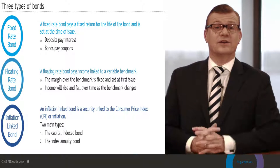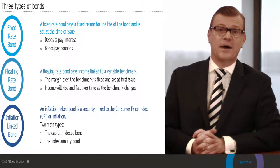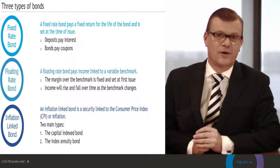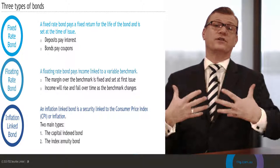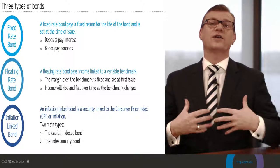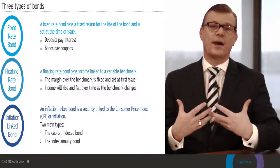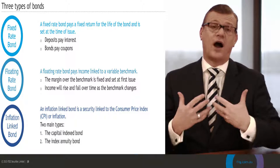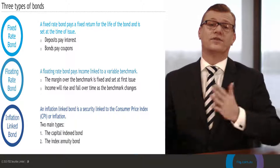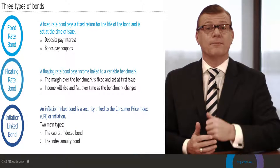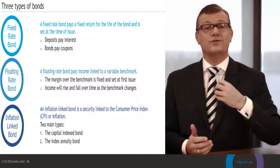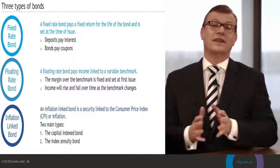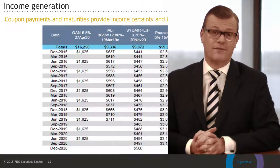Capital indexed annuity bonds are really popular in this market. They allow you to actually utilise your capital over the life of the bond. So instead of taking more risk to generate a higher return, you can actually use your capital to generate a higher level of income and therefore a higher level of lifestyle over the term of that bond. Unlike most other bonds, you don't get a face value maturity payment because the capital is paid to you over the life of the annuity.